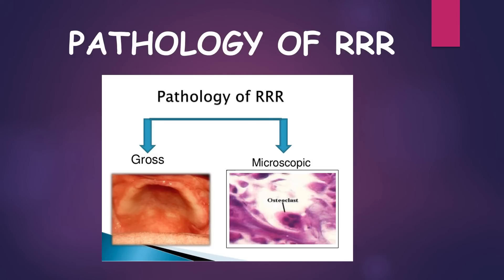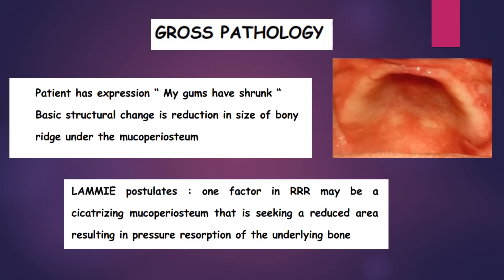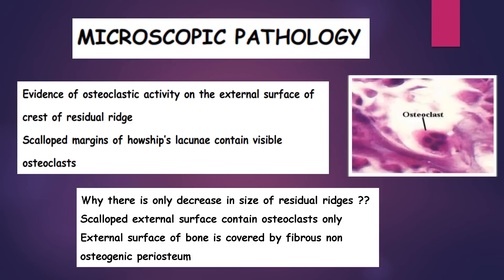The pathology of residual ridge resorption can be of two types: gross pathology and microscopic pathology. In gross pathology, the patient frequently expresses that 'my gums have shrunk.' The basic structural change in residual ridge resorption is the reduction in the size of the bone ridge under the mucoperiosteum. It is primarily a localized loss of bone structure. Lami postulates that one factor in residual resorption may be a contracting mucoperiosteum seeking a reduced area, resulting in pressure resorption of the underlying bone.